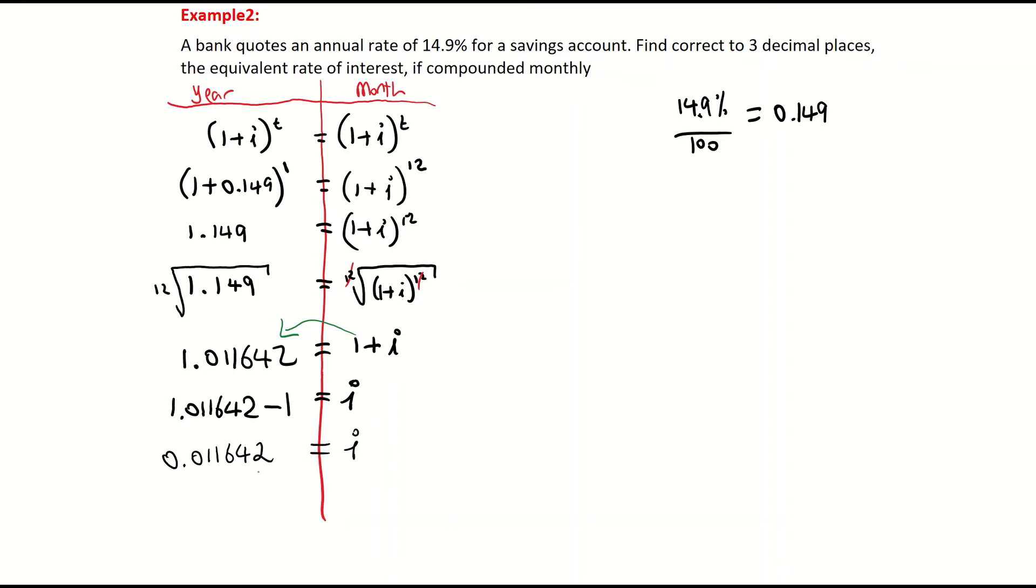My interest rate always wants to be as a percentage. So I'm going to multiply this by 100 to get it into a percentage. That's getting me 1.1642. The question wants it to three decimal points. So that means my final interest rate per month is going to be 1.164%. And that's a couple of examples on our converting interest rates.